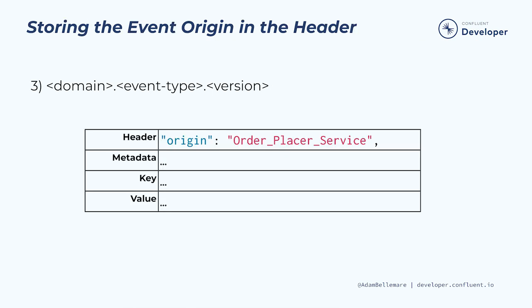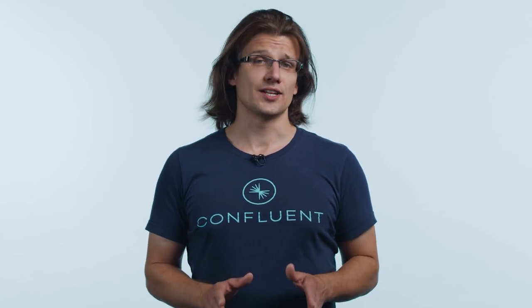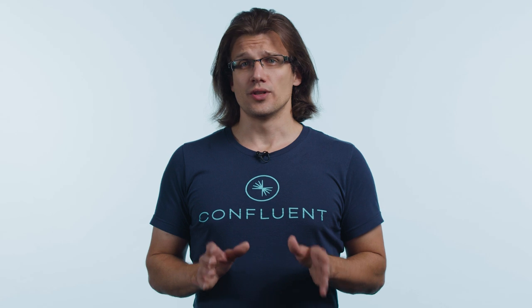A third option, should you choose to leverage event headers, is to put the origin inside of the record header. This provides you with both the origin information of the service that created the event, but also decouples the service identity from the topic name. If you end up changing the service that produces the order events, you can simply update the origin header information. Standardizing event stream names helps prospective consumers find the data that is relevant to them and provides clues as to which version of a stream you're planning to read from. It's always a good practice to use the most recent versions of a stream, as earlier versions are usually deprecated and will likely be removed.